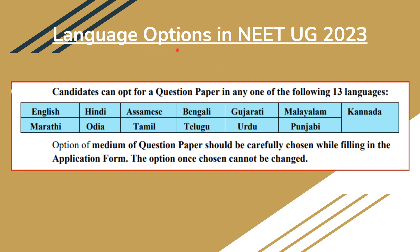The languages available in NEET UG 2023 are English, Hindi, Assamese, Bengali, Gujarati, Malayalam, Kannada, Marathi, Odia, Tamil, Telugu, Urdu, and Punjabi — a total of 13 languages. Candidates are required to choose the medium for the question paper very carefully, as they cannot change it later.